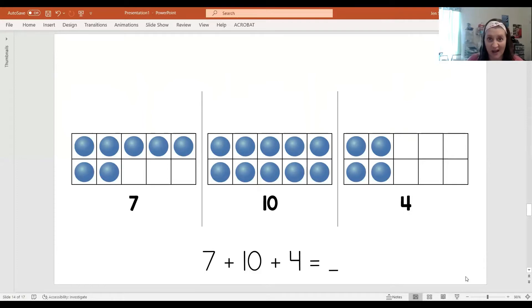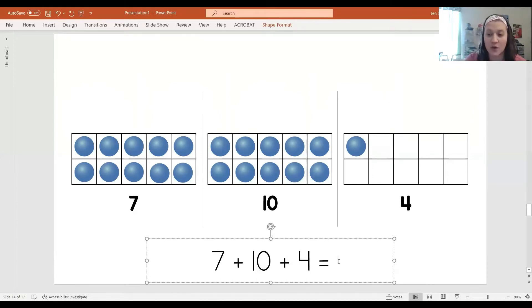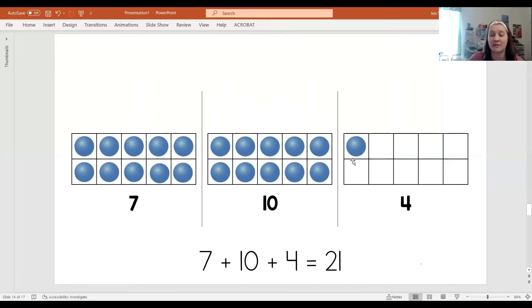So we're going to do 7 plus 10 plus 4 and find out what that equals. We could count them all, but that would take a lot of time. I look at my seven and notice there's three empty spots. I could borrow some dots from this four to fill in the empties. Now look what we have. I have two groups of 10, so we can count by 10s. 10, 20, 21. So 7 plus 10 plus 4 equals 21. All we had to do was move around some dots and look for those groups of 10, and that helped us add really quickly.